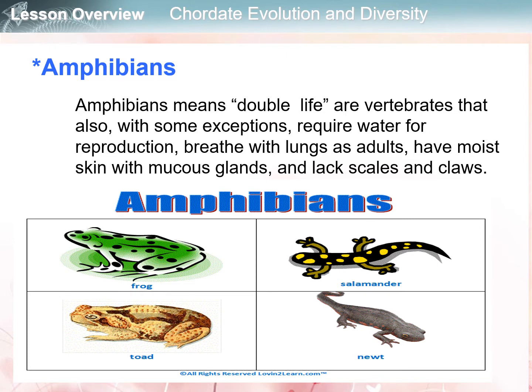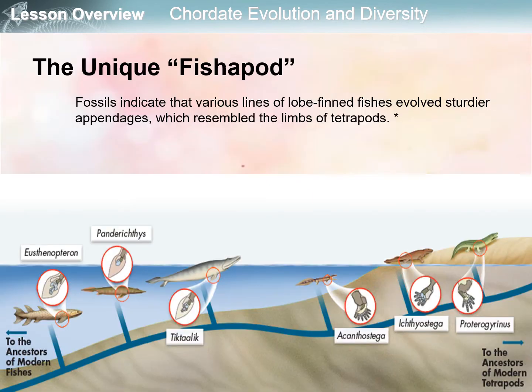In the previous video I already mentioned the origins of chordates as well as the groups such as the non-vertebrate chordates, jawless fishes, sharks, and bony fishes. This time I will continue with amphibians. Amphibians means 'double life.' They are vertebrates that, with some exceptions, require water for reproduction because they lay eggs. They breathe with lungs as adults, don't have gills, have moist skin with mucous glands, and lack scales and claws. Examples include the frog, toad, salamander, and newt.